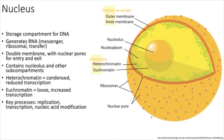Inside the nucleus, some regions are tightly packed — stored for later or containing genes we don't want to use right now. Euchromatin is loose, decondensed chromatin that you can access for transcription. The main processes that occur inside the nucleus are transcription — making messenger RNA — and replication, which must happen if you're going to divide your cells.